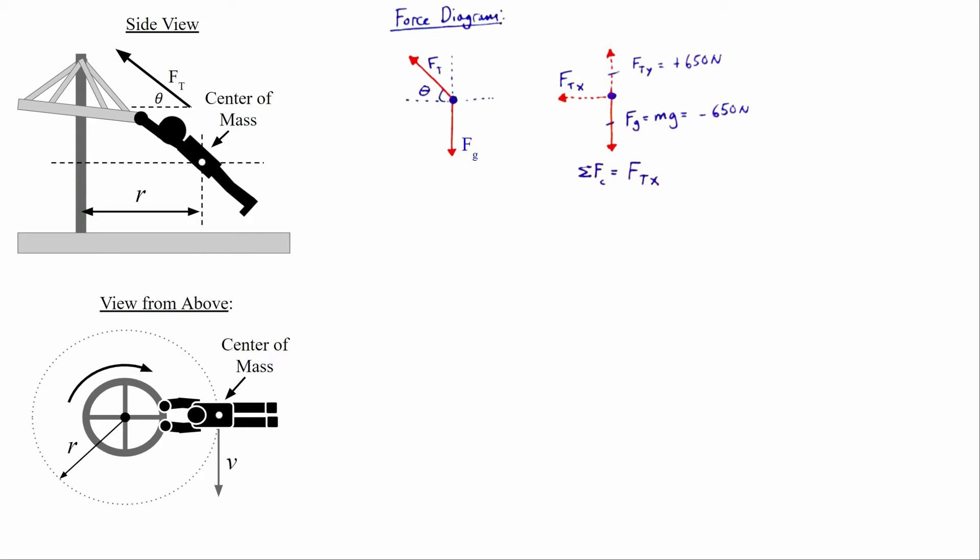If my mass is 65 kilograms, the gravitational force on me is approximately negative 650 newtons, assuming a gravitational field strength of 10 newtons per kilogram. That makes the y component of tension positive 650 newtons. To find the actual tension force in my arms, we need both the y component and the x component of tension. Since I'm moving in a circular path, the x component is the sum of the centripetal forces.